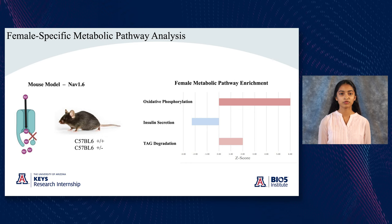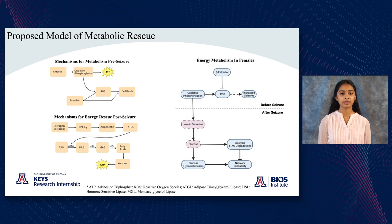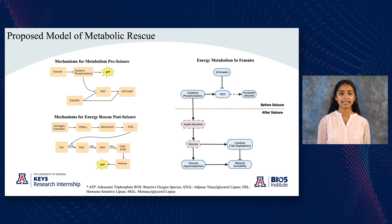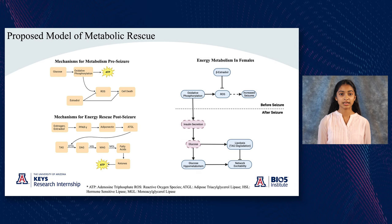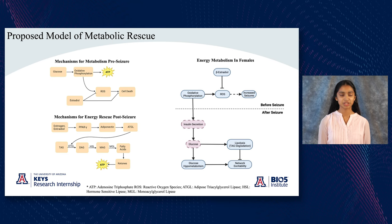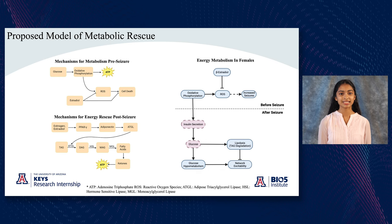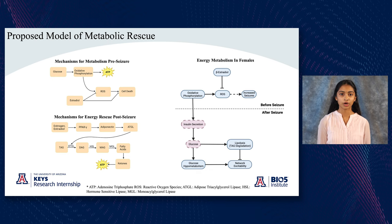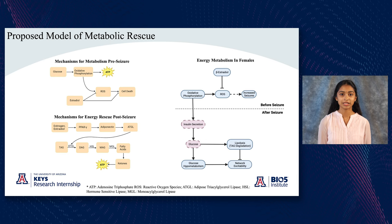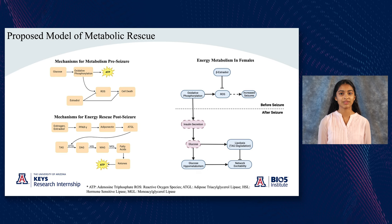Before seizure, we hypothesized that estradiol acts as an antioxidant, allowing for increased capacity of oxidative phosphorylation so that they can make enough energy to sustain themselves throughout the seizure. After seizure, we proposed that estradiol and estrogen activate the gene that allows for translation of the protein to break down lipids, which can then be used to make ketones and ATP. This fits into a bigger model where we propose that females have a switch of energy source after seizures: increased oxidative phosphorylation before seizures leads to glucose depletion, leaving the mice to resort to using lipids as an alternative energy source.